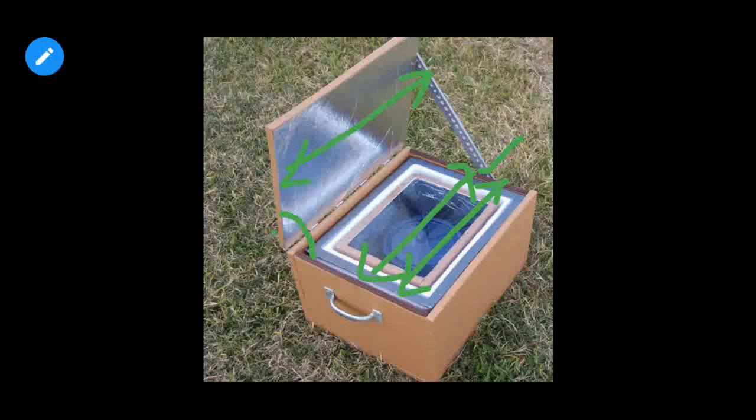The utensil which you are using for cooking, you have to paint that utensil black so that it also absorbs much radiation, so that it can heat up very quickly.